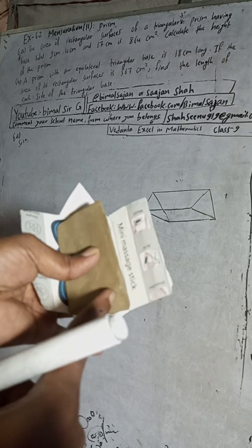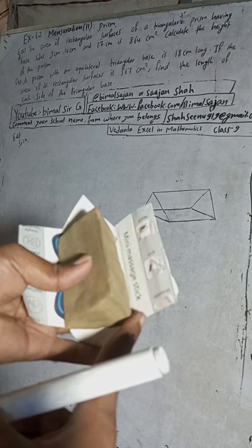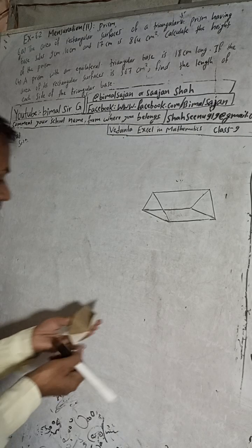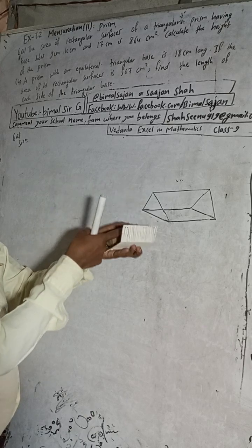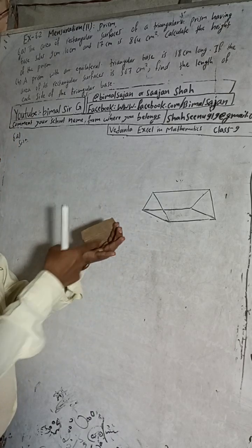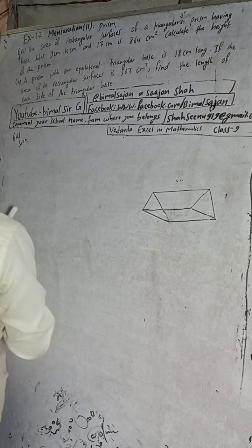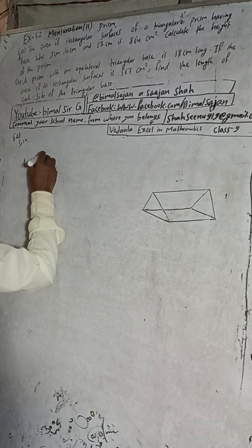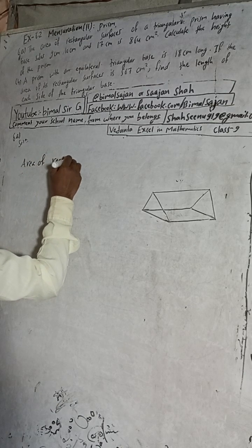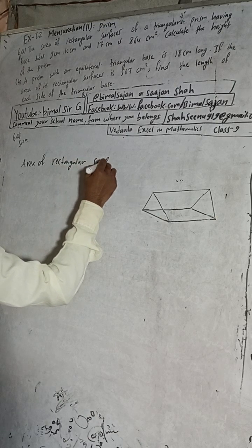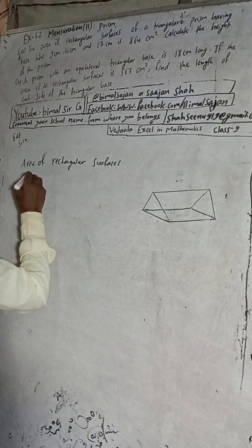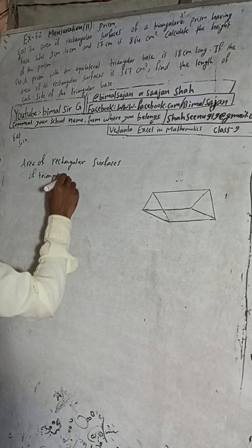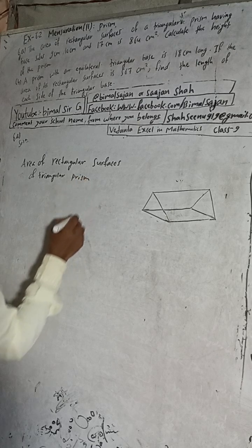Given: base sizes — that is, the three sides here — are 9 cm, 10 cm, and 17 cm. And what is also given? The area of rectangular surfaces. Area of rectangular surfaces of a triangular prism is equal to 864 cm².